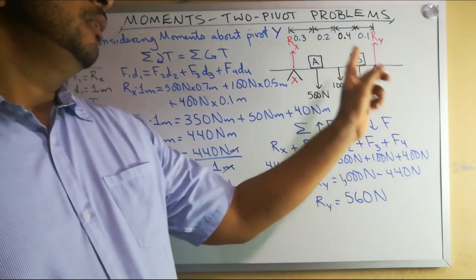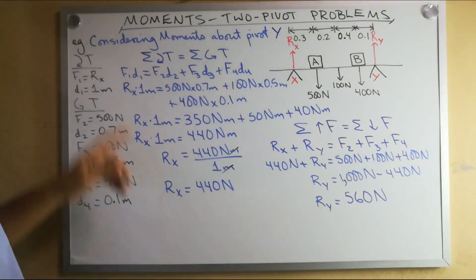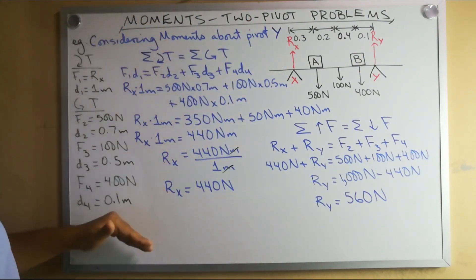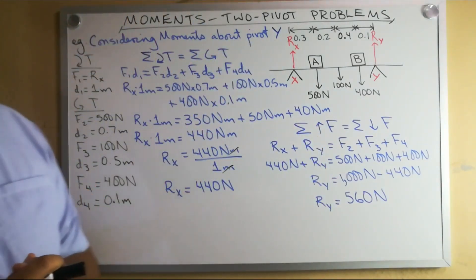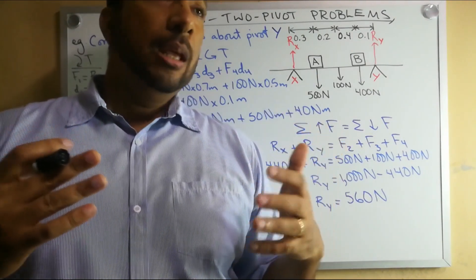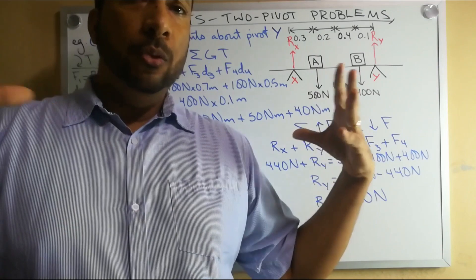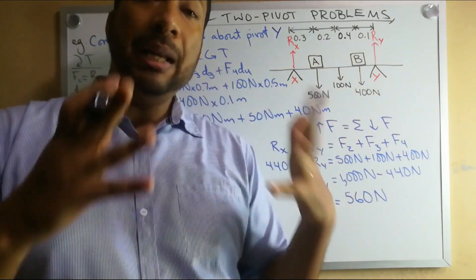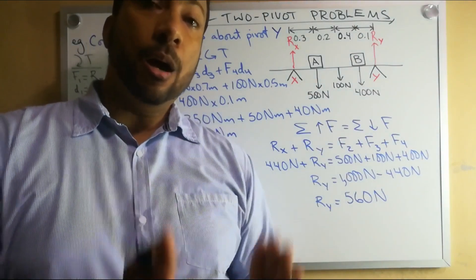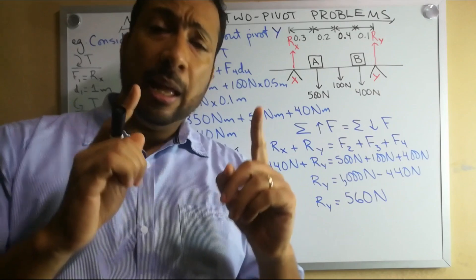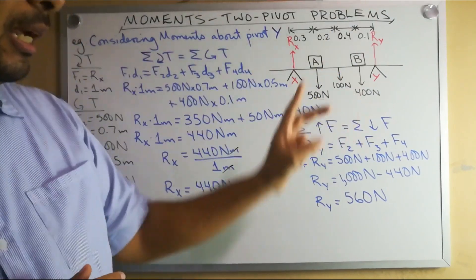Next, how do we find the reaction force at point Y, R sub Y? Well, we could do it two ways. We could repeat this process by considering moments about pivot X and go through these steps again. Or we could do it a rather simpler way. Let's first recall that according to Isaac Newton, for every action force is equal and opposite reaction force. And if things are in equilibrium, those action and reaction forces cancel each other out. They are in balance. Since our plank here is balanced, then the downward forces and the upward forces must be equal to each other. Please note, I am talking about the forces, not the moments.